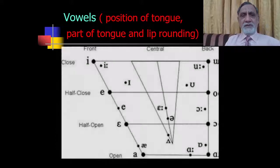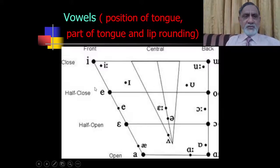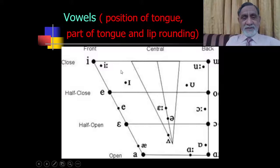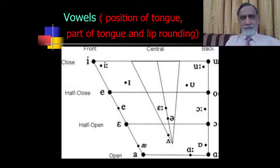For further explanation, you can count the 12 vowels shown in the diagram: 1, 2, 3, 4, 5, 6, 7, 8, 9, 10, 11, 12. They are described according to position of tongue, part of tongue, and lip rounding. As placed in the diagram, you can identify them as close, half-close, half-open, open, and front, central, back. These are the pure vowels.